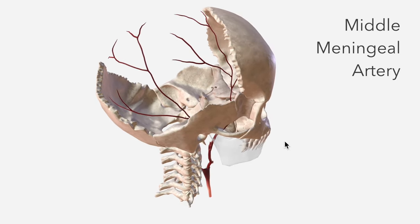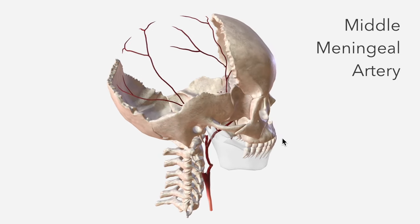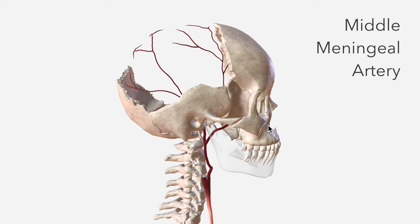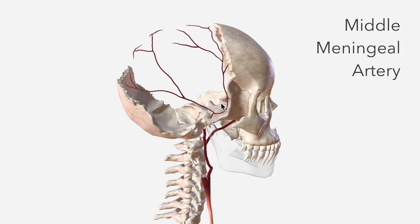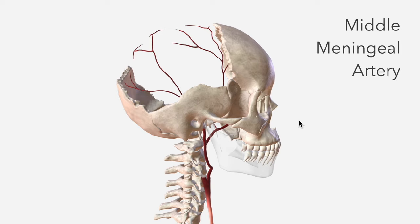The middle meningeal is frequently implicated in the pathology of extradural hemorrhage. In the context of this thin part of the temporal bone being shattered by trauma, the middle meningeal will rupture. The arterial blood will cause separation between the periosteal layer of the dura mater and the bone itself, causing compression on the brain.